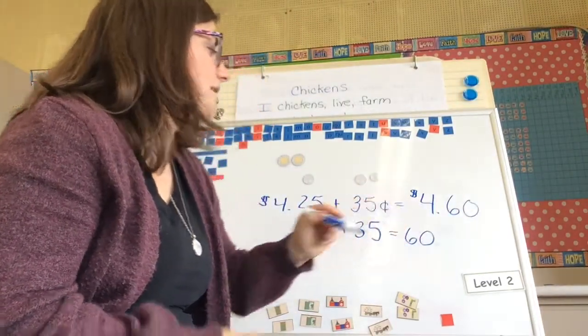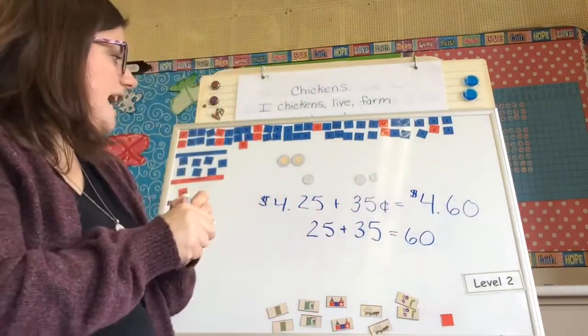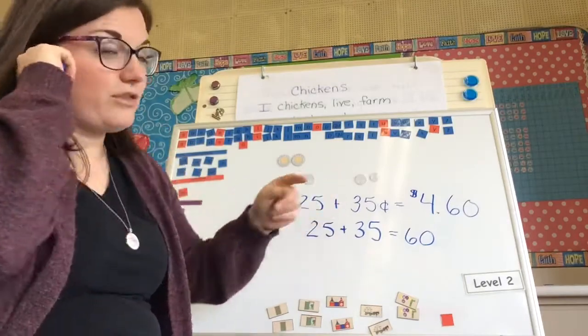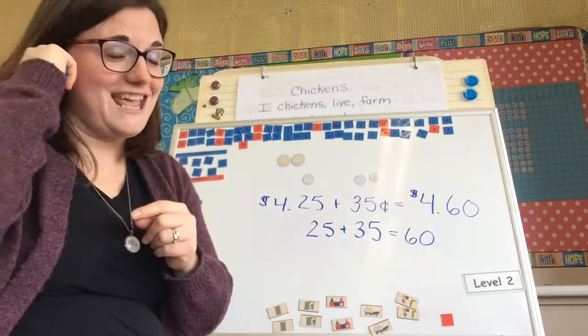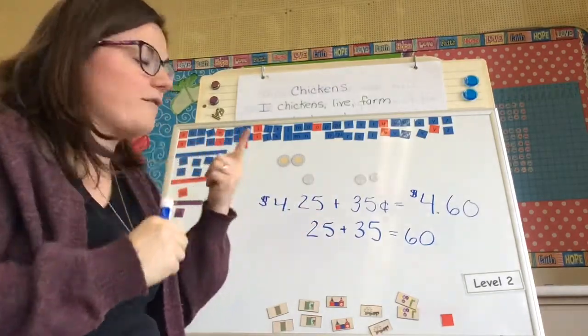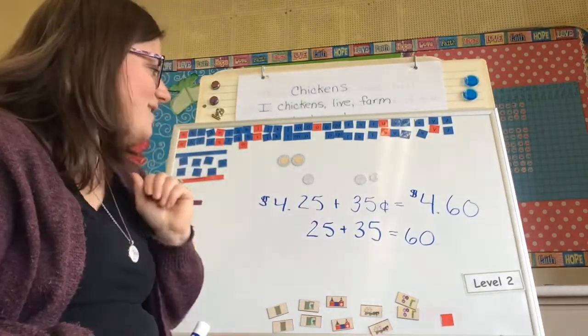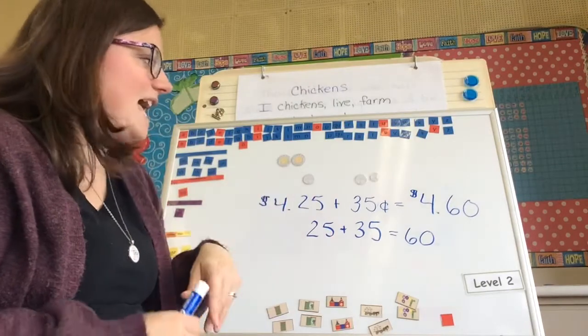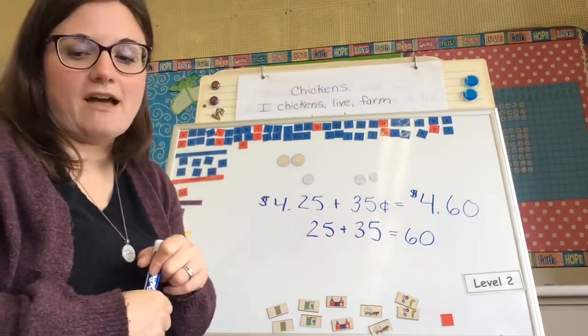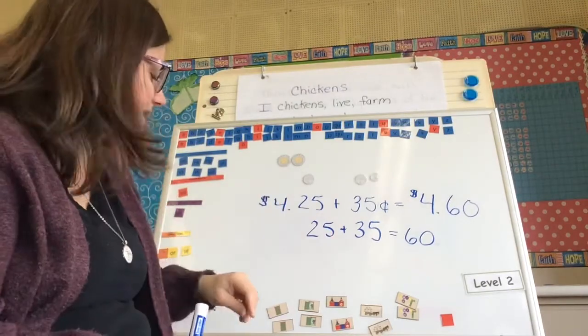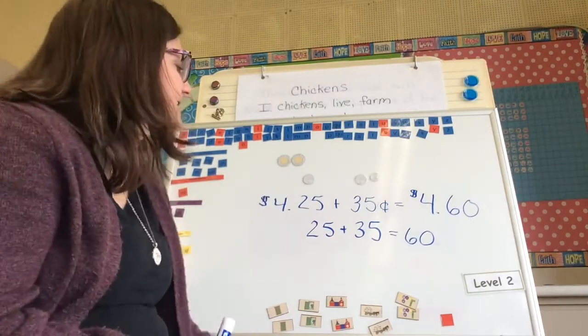We can think of adding $0.25 and $0.35 by counting by fives and counting by tens. So we would have $4.60.